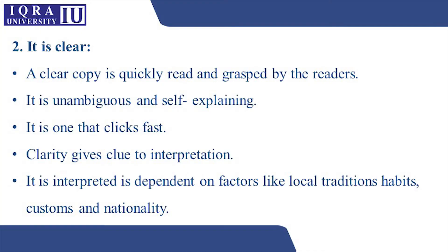The second essential for copy is that it should be clear. A clear copy is quickly read and easily grasped by readers — it is unambiguous and self-explaining. Clarity gives clue to interpretation; if something is short, precise, and also clear, there will be fewer chances of misinterpreting what you're trying to say. It is also dependent on factors such as local tradition, habits, customs, and nationality. When writing for a particular audience, you should focus on these factors so that whatever you write is clear according to that city, country, and their traditions and customs.